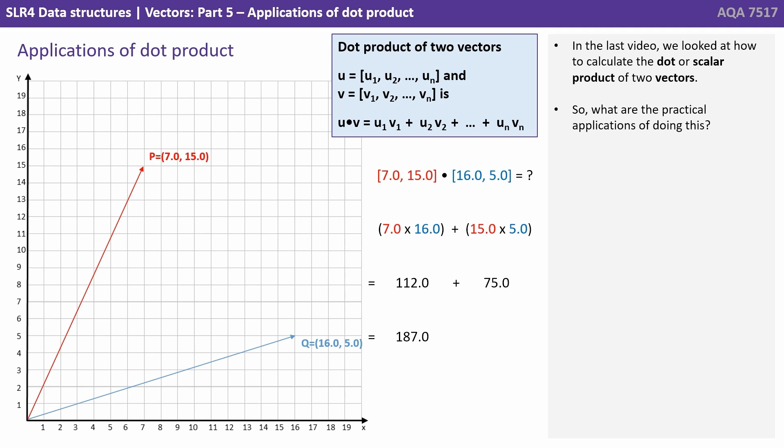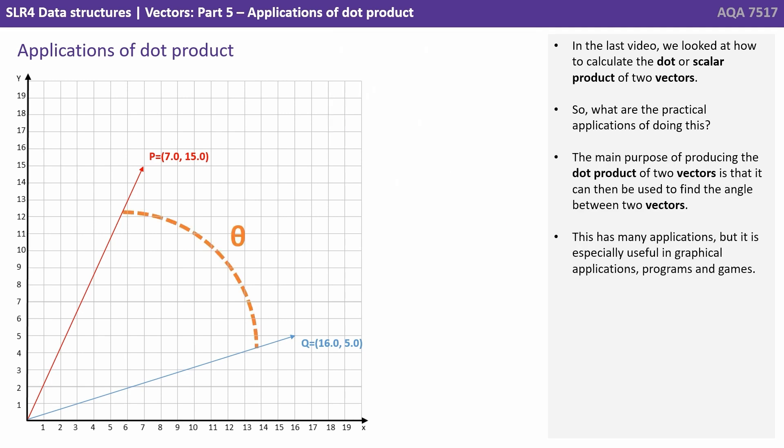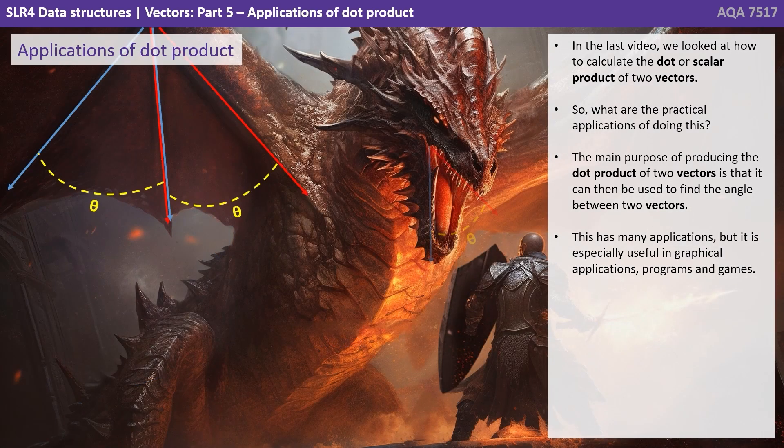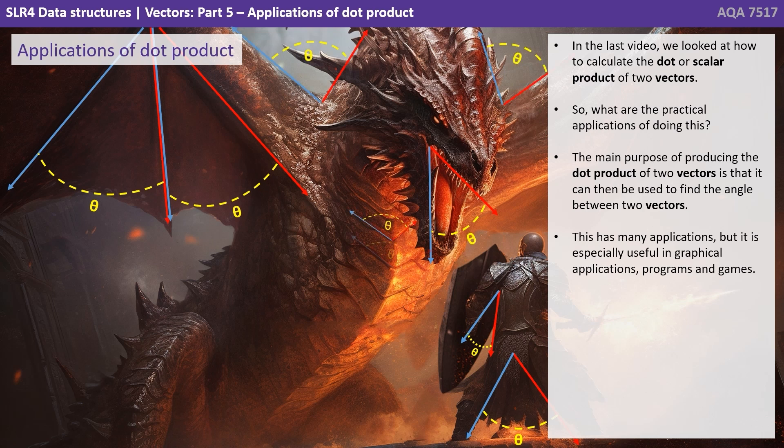So in the last video we looked at how to calculate the dot or scalar product of two vectors. So what are the practical applications of doing this? The main purpose of producing the dot product of two vectors is that it can be used to find the angle between any two vectors. This has many applications but is especially useful in graphical applications, programs and computer games.